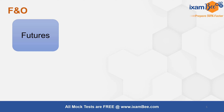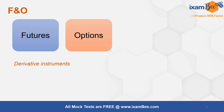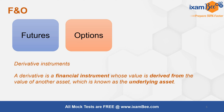F&O stands for futures and options. These are derivative instruments which are used for trading in the derivatives market, which is a part of the capital markets regulated by SEBI. Derivative instruments are basically financial instruments that derive their value from another asset, referred to as the underlying asset. Derivatives on their own do not have any value — they derive their value from some other asset known as the underlying.